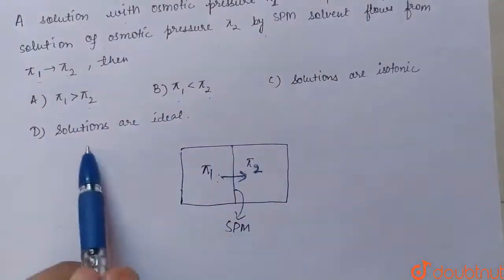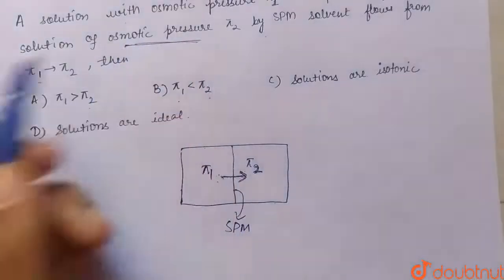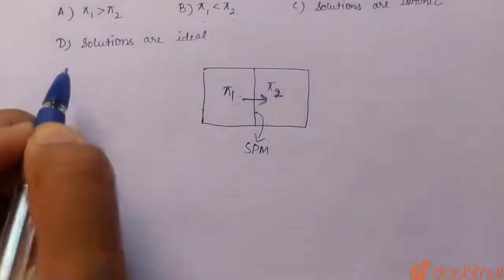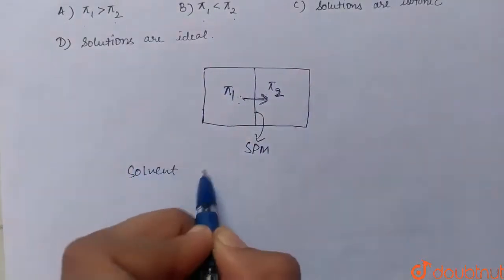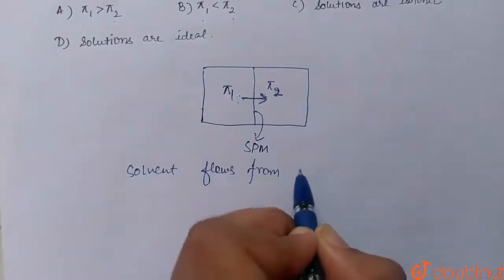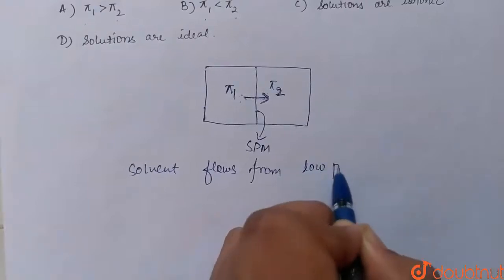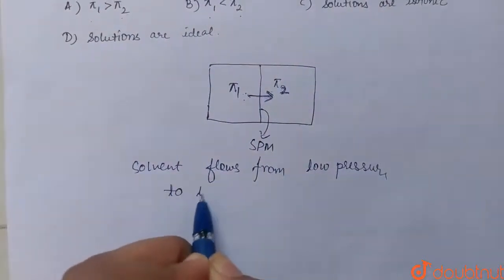According to osmotic pressure conditions, we can write that solvent flows from low pressure to high pressure area.